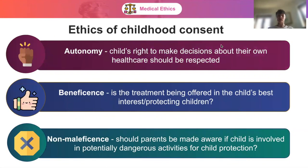Looking at the ethics of child consent: in terms of autonomy, it should be the child's right to make decisions about their healthcare and this should be respected. Gillick Competency says that for minors under 16, their autonomy should still be respected as long as the child has capacity. We also need to think about beneficence — is the treatment being offered in the child's best interest? And we need to consider whether a child is able to identify what is in their best interests.